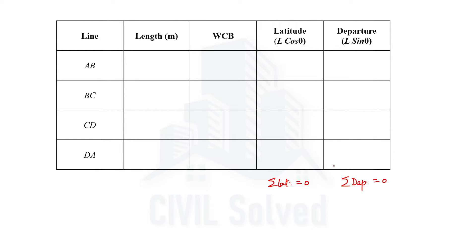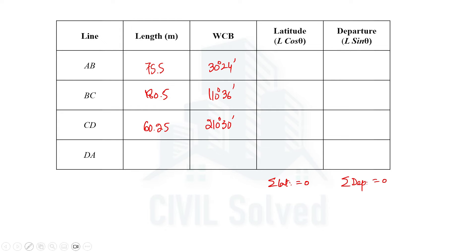So departures — the summation of all components in the x direction — equal zero, and latitudes, the y components, also equal zero. In a closed traverse we move back to the same starting point. Let me write the length and bearing of each line. For the DA line, the length is unknown — let's name it capital L — and the bearing is theta, both of which we have to determine.